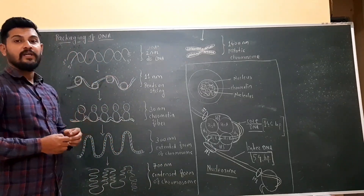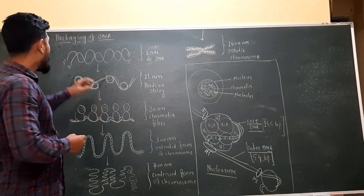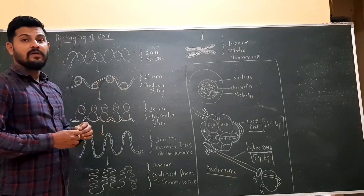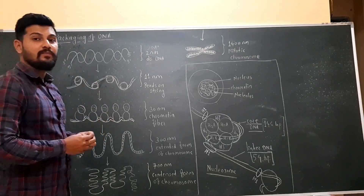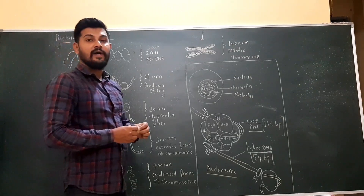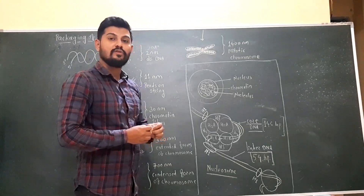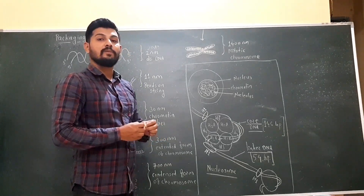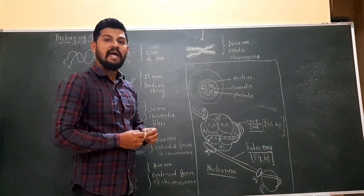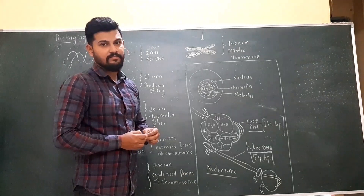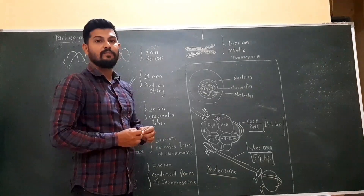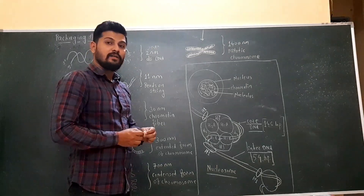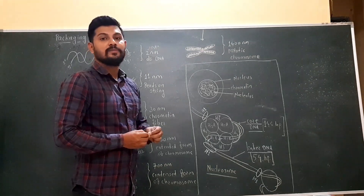The wrapping of DNA occurs around some basic proteins. These basic proteins are called as the histone proteins. These histone proteins are rich in the positively charged amino acids like lysine and arginine. Due to the presence of the positively charged amino acids, these histones are the positively charged proteins.